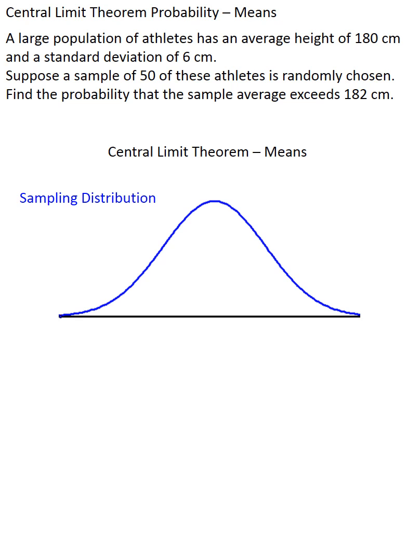The central limit theorem for means tells us three things about this sampling distribution. One, that it's normally distributed as you can see in the picture. Second, that its mean will be the same as the population mean, in this case 180 centimeters.